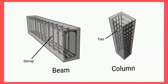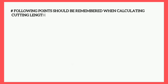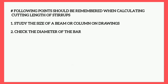Remember, the transverse bars provided in the column are known as ties, and the transverse bars provided in the beam are known as stirrups. On site, generally we use the same term 'stirrup' for both. Stirrups are used in beams to counteract shear failure and to hold the longitudinal bars in position.